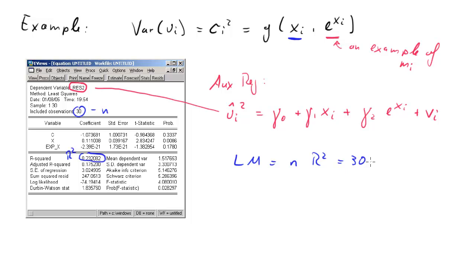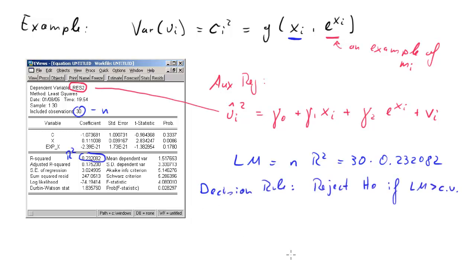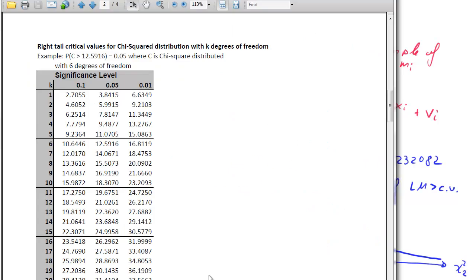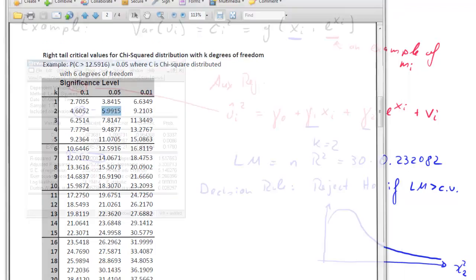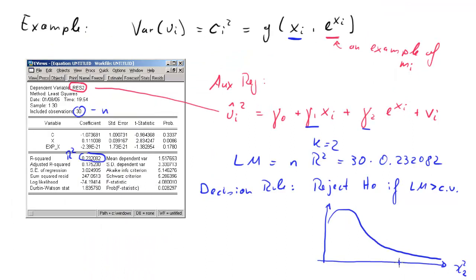To calculate the value of the test statistic, we just multiply these two together. The decision rule is that we reject H-naught if the calculated test statistic LM is larger than the critical value. This makes sense because only for large values of R squared do we collect evidence against H-naught in favor of the alternative hypothesis. Here is a picture of a chi-squared distribution with two degrees of freedom. Our critical value at alpha 5% is 5.99. This will always be a right-tailed test, because only large values of R squared indicate a rejection of the null hypothesis.